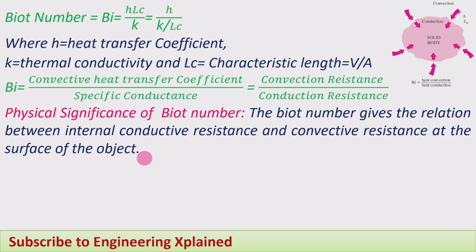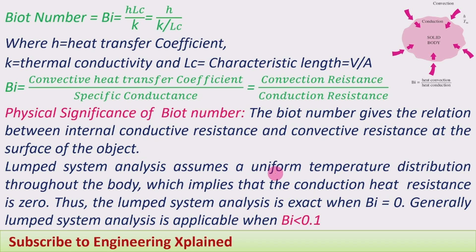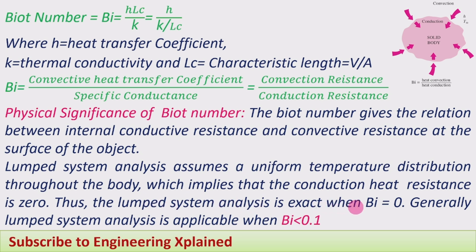The lumped system analysis assumes a uniform temperature distribution. The Biot number is used for analyzing the lumped system analysis, which assumes uniform temperature distribution throughout the body — that is, negligible internal temperature gradients. There is no variation of temperature within the solid body, and the temperature is uniform from center to surface, which implies that conduction resistance is zero. Thus lumped system analysis is exact when the Biot number is zero.